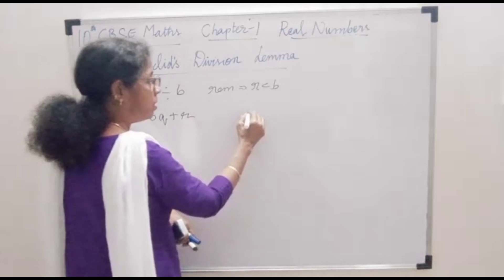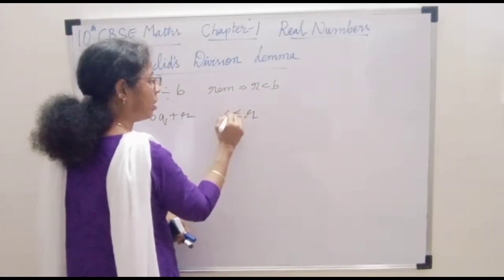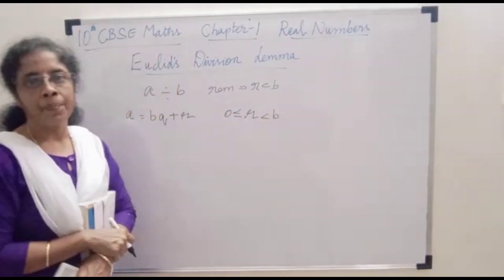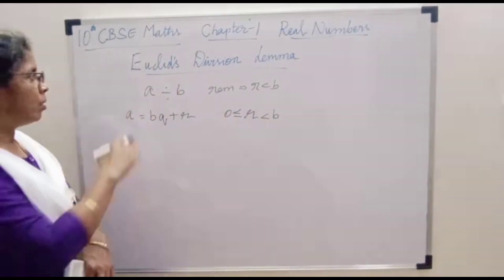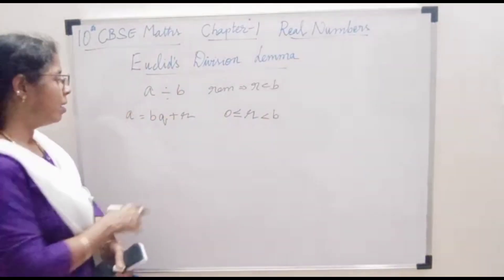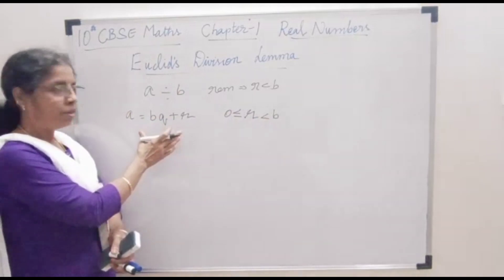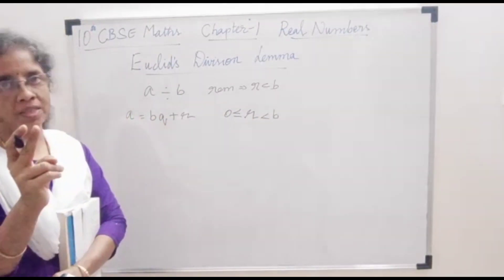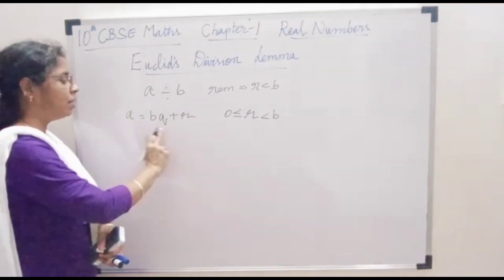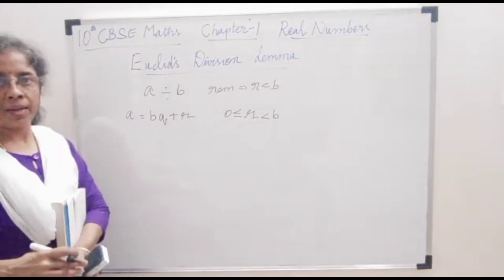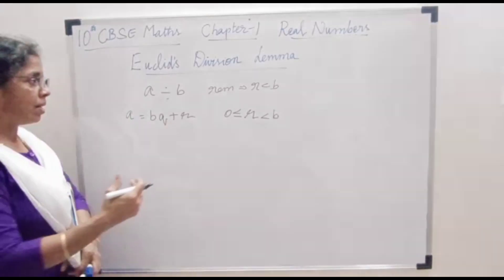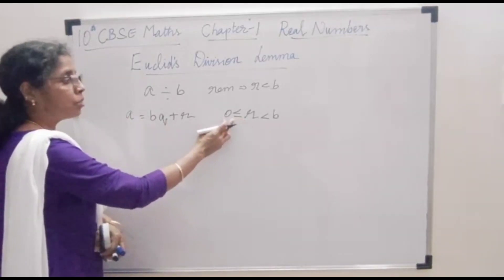The remainder R can be greater than or equal to 0 but always less than B. For Euclid's division lemma, you will be given two positive integers. Write them in this form - this is step 1.